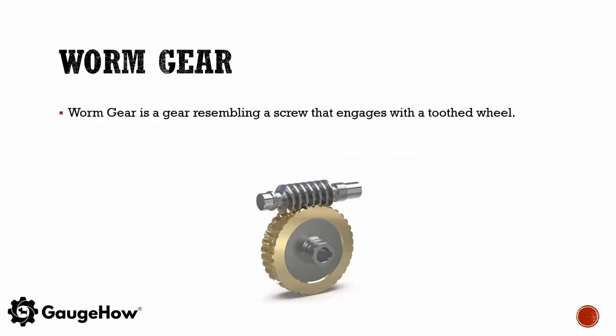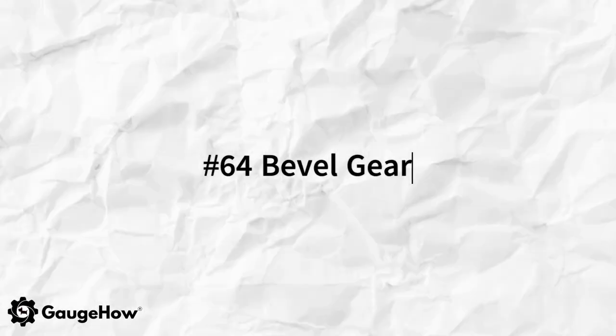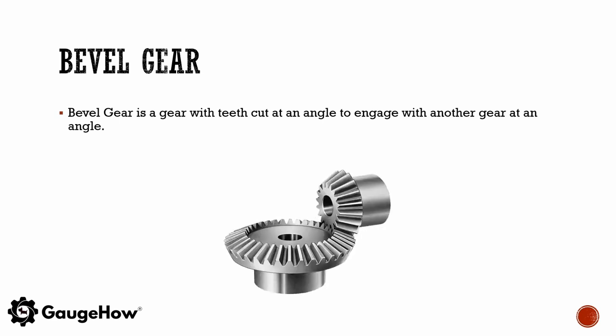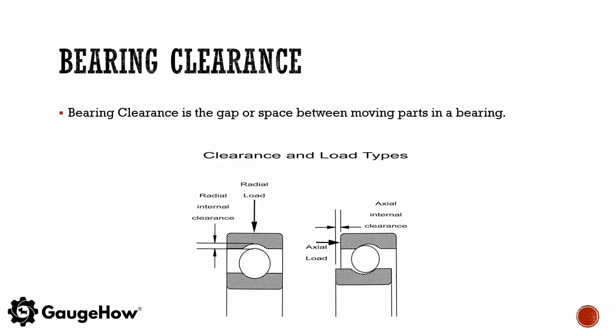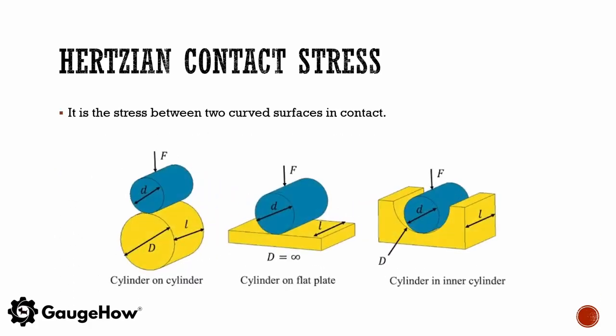A worm gear is a gear resembling a screw that engages with a toothed wheel. A bevel gear is a gear with teeth cut at an angle to engage with another gear at an angle. Bearing clearance is the gap or space between moving parts in a bearing. Hertzian contact stress is the stress between two curved surfaces in contact.